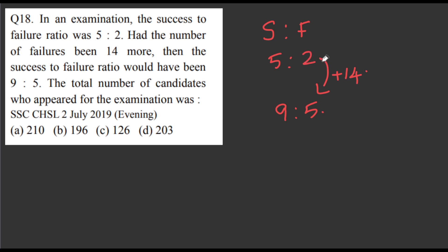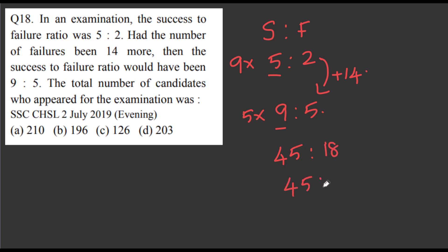Now we're going to work with the failure value. The number of successful candidates remains the same. The first ratio is 9 is to 5, and we make the success value equal. So 45 is to 18, and 45 is to 25. Multiplying to equate the success part, failure increases from 18 to 25.